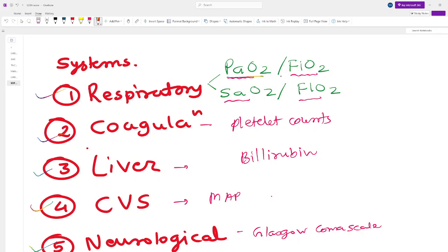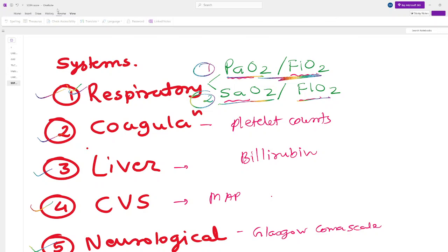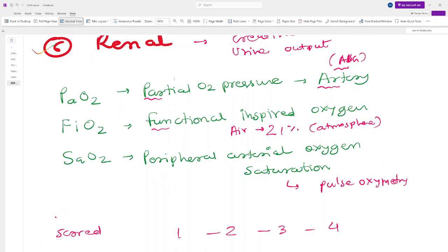For example, if you want to know how your respiratory system is working, a very general view, you will do PaO2 ratio FiO2 or SaO2 ratio FiO2. These two ratios are used to score the respiratory function in the SOFA system.